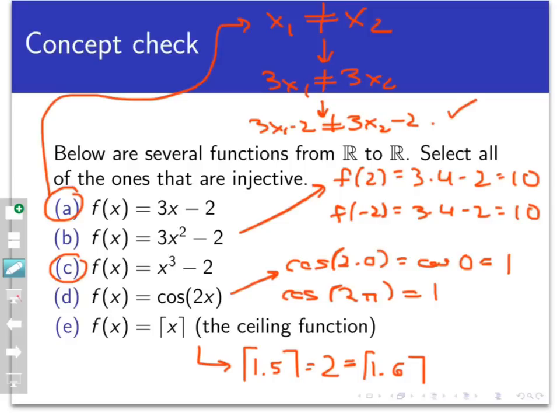The same line of reasoning works for C. If I start with two different inputs and cube them, the results are different because I am cubing and not raising to, say, a second power or a fourth power. Subtracting 2 maintains that difference, and so the outputs of the function are different.